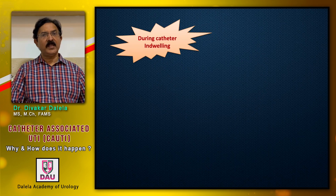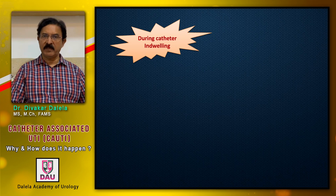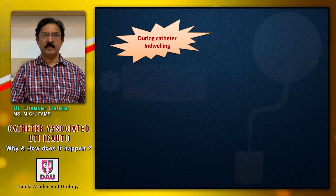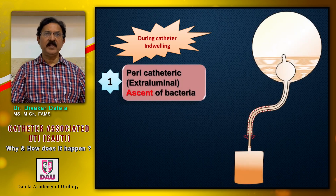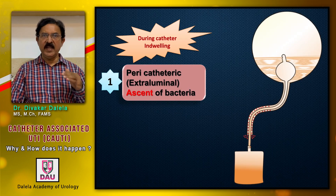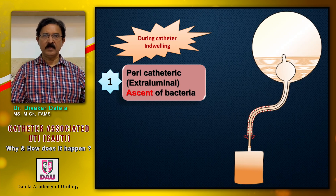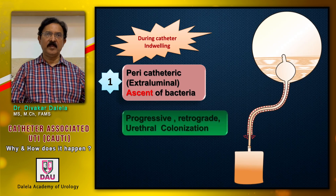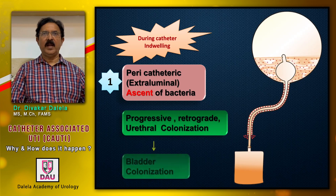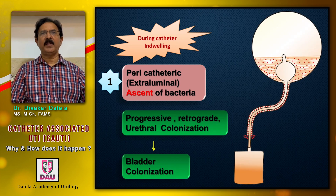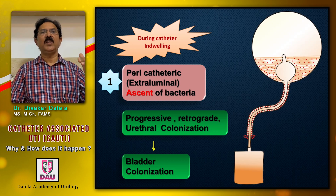So this understanding is very vital. During catheter insertion, please do not inflate the balloon more than 7–8 cc in a male and 10 cc in a female. Now during catheter indwelling, one way is pericatheteric extraluminal spread: bacteria can ascend from external urinary meatus into the urethra.